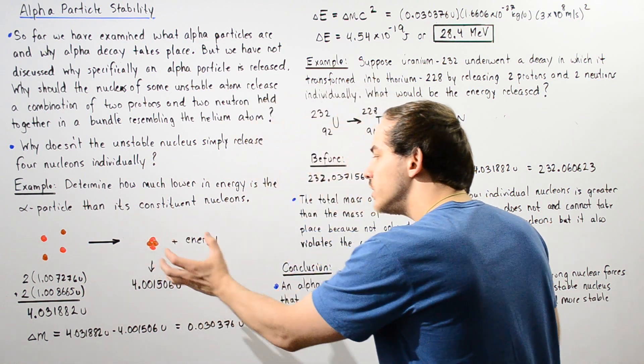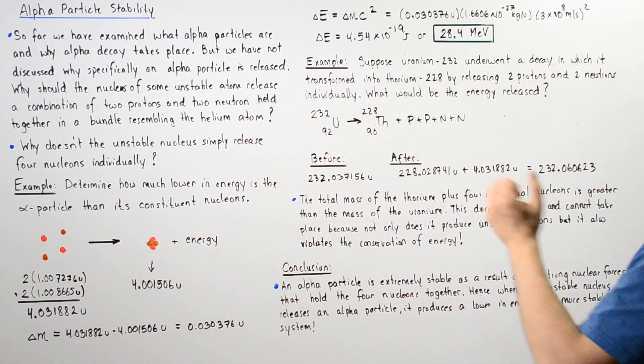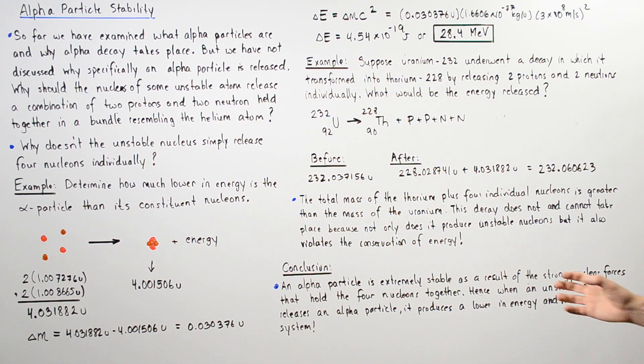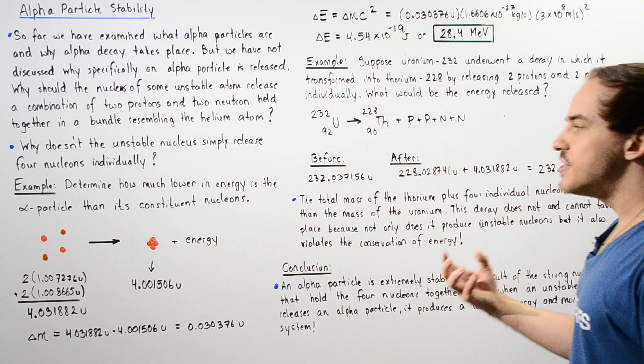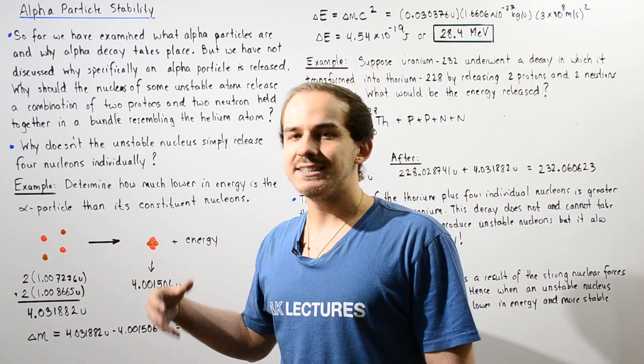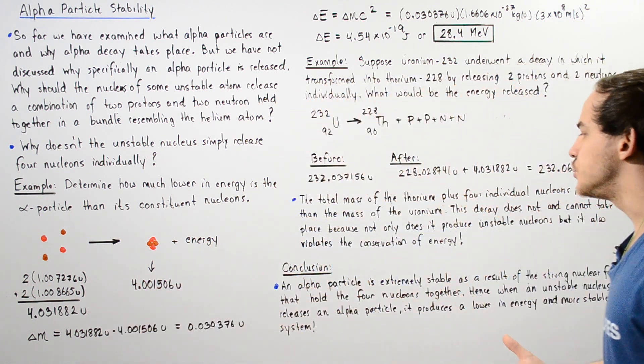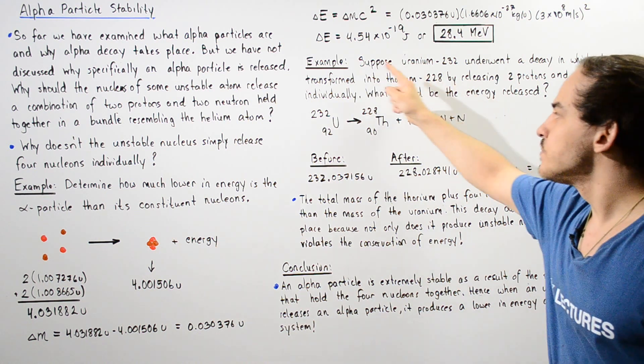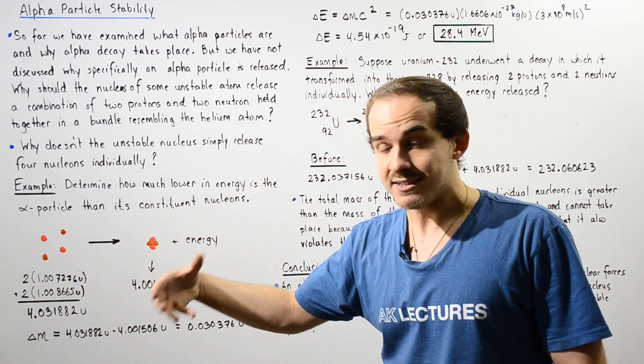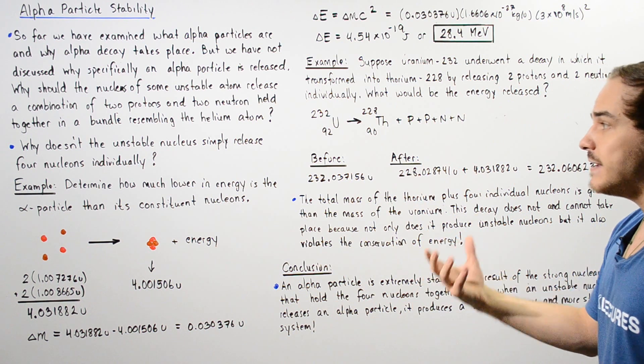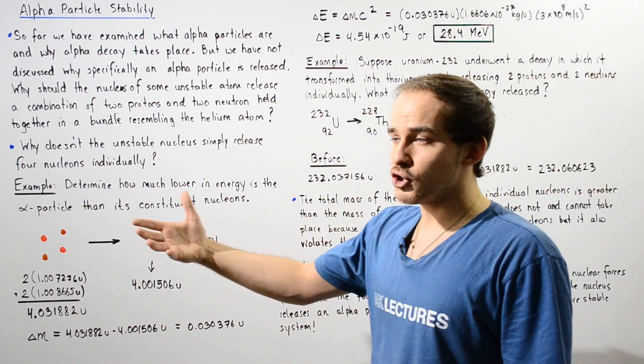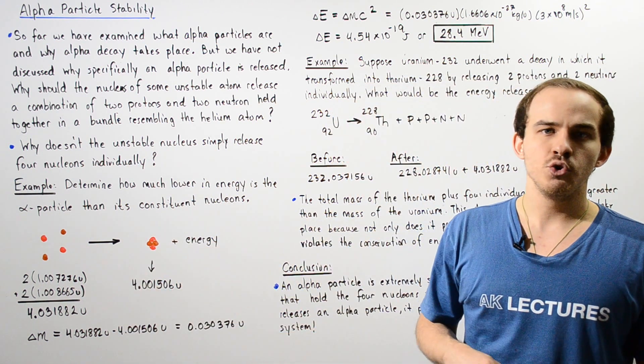And in the process, it releases energy and so it's more stable. Therefore, when an unstable nucleus releases an alpha particle, it produces a lower in energy and a more stable system that does not violate the conservation of energy. And that's exactly why our alpha particle is released instead of the four individual nucleons being the two protons and two neutrons.